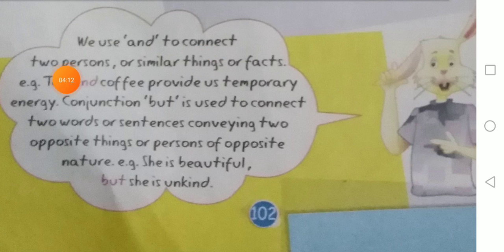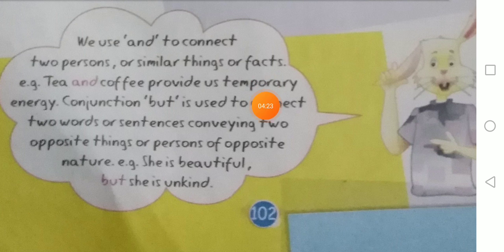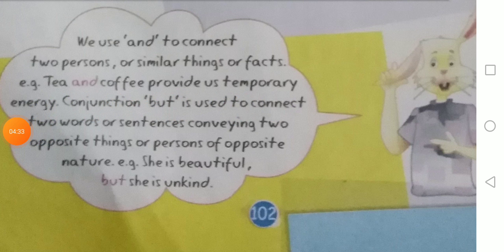We use 'and' to connect two persons. And का इस्तेमाल दो persons को जोड़ने के लिए, जैसे दो नामों को जोड़ने के लिए, और similar things — या दो एक जैसी चीज़ें को जोड़ने के लिए होता है। For example: tea and coffee provide us temporary energy. Tea and coffee दो नाम हैं, और यह एक fact भी है तो यहाँ पर 'and' का इस्तेमाल हुआ।